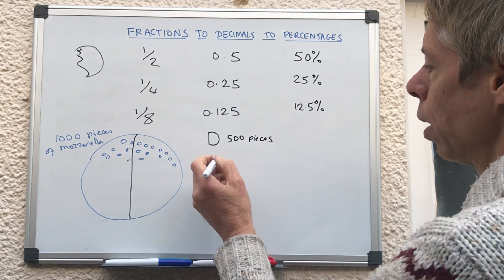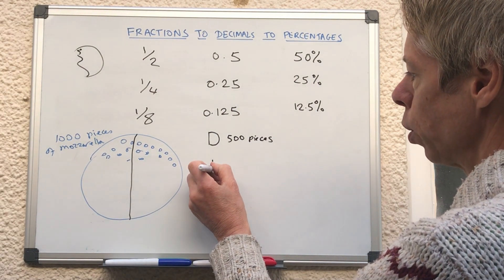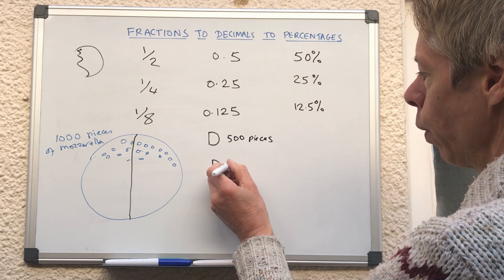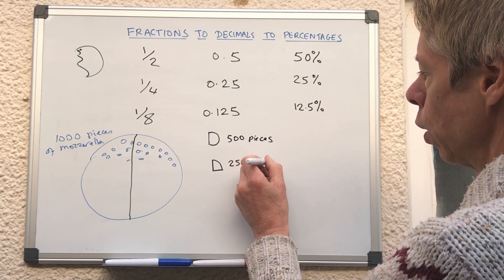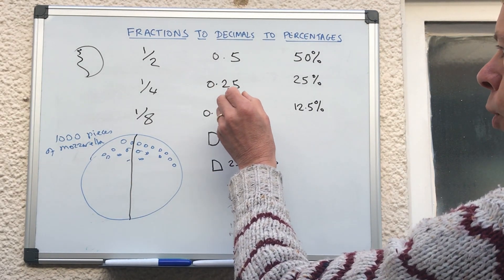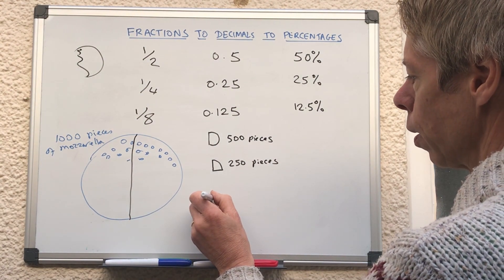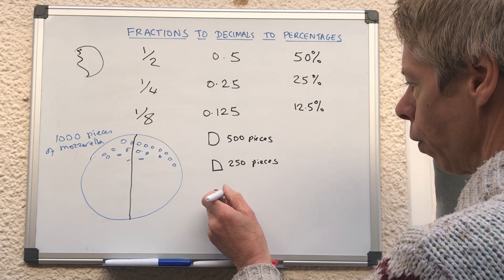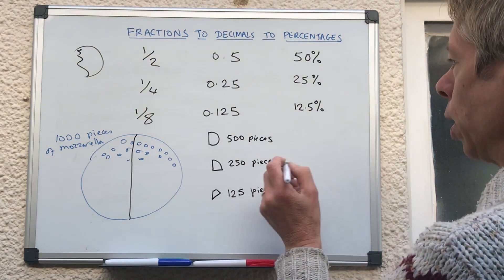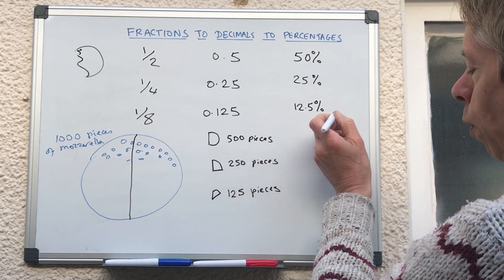Why have I chosen 1,000? Well, you'll see in a minute. So if we then cut that half into quarters, into two quarters, we've got half of that. Now we've got 250 pieces of mozzarella. So that's where the 0.25 and the 25% comes in. If we then cut that quarter up again into eighths, we've got half of that. We've got 125 pieces, which is where the 0.125 comes in and where the 12.5% comes in.